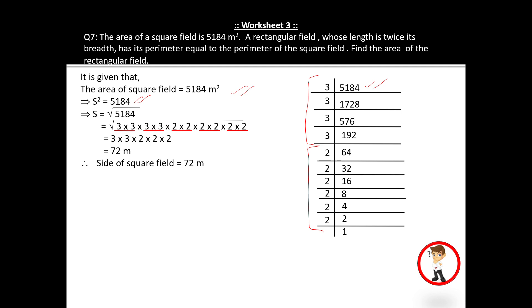Now make the pairs together. Remember, same digit pairs you have to make together. It will come as 3, 3, another 3, 3, then 2, 2, 2. Multiply them together, you will get 72 meters. This 72 meters is the side of the square field.